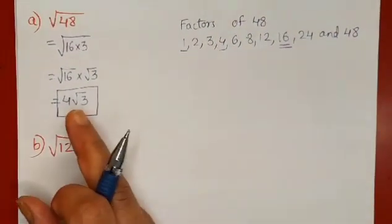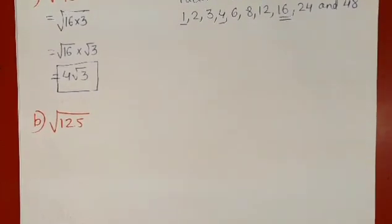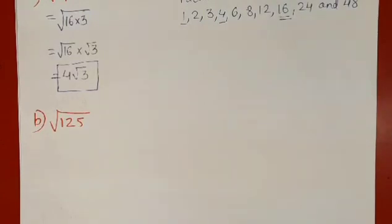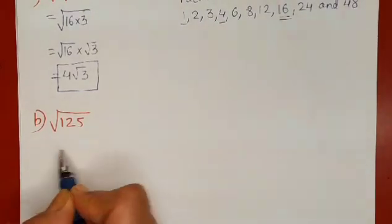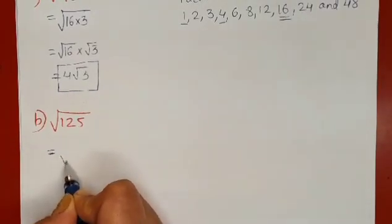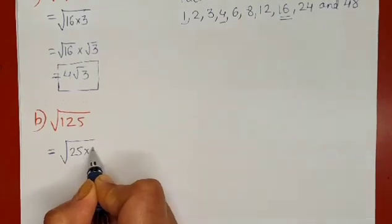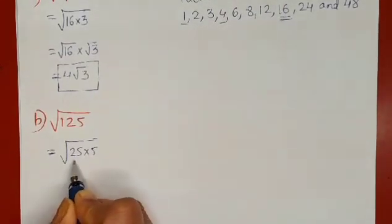Let us turn to our second example. Second example is square root of 125. Now here too we have to express this 125 as the product of 25 and 5, as 25 is the largest perfect square number among the factors of 125.